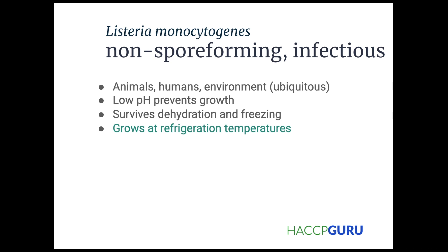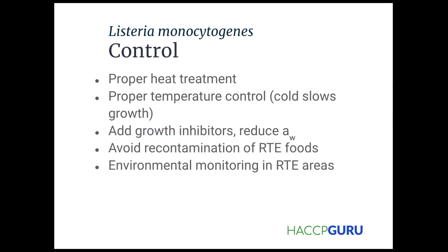Listeria can be found in humans, animals, and the environment. Low pH prevents growth. It survives dehydration and freezing, and — notably — it grows at refrigeration temperatures, which is why it's highlighted. So proper heat treatment is important. Cold slows the growth but doesn't stop it. You add growth inhibitors by reducing water activity. Avoid recontamination of ready-to-eat foods through proper sanitation and environmental monitoring.